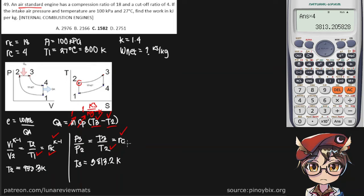Now we have both of these, so we can find our QA. M is 1, CP is also 1, and of course, our T3 minus our T2. What does that give us? 2,860 kilojoules per kilogram. Don't forget the per kilogram. Okay, so we now have QA.